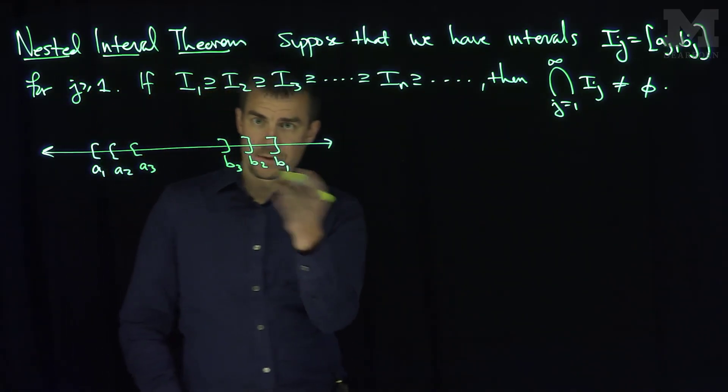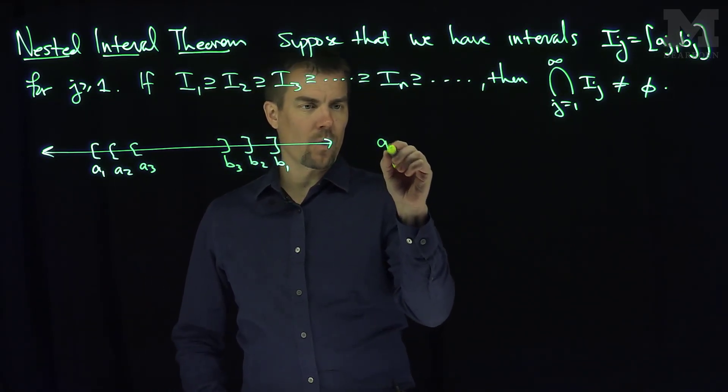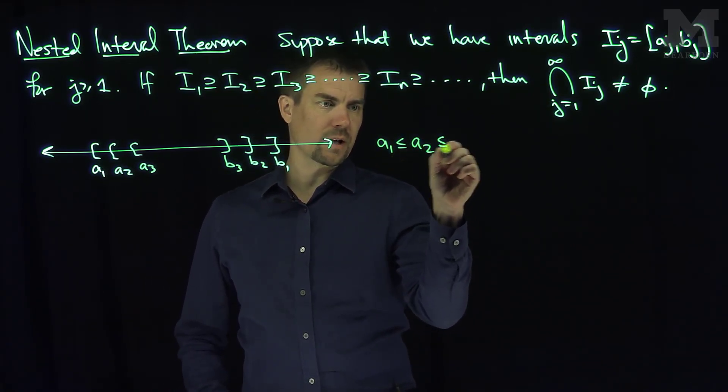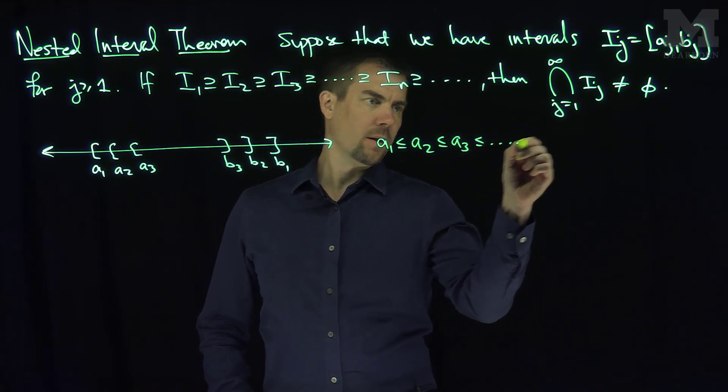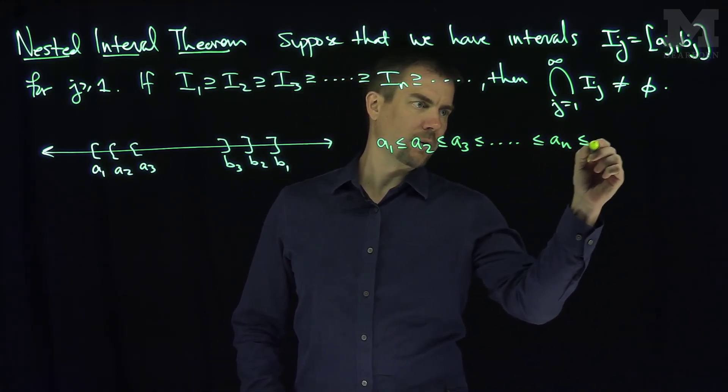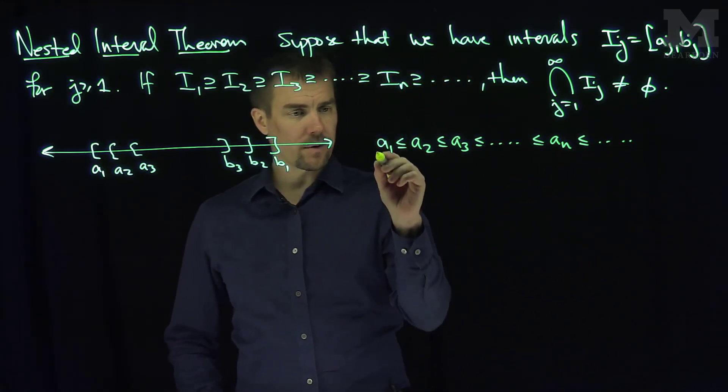And so note, from this diagram, we can see the following. We can see that a1 is less than or equal to a2 is less than or equal to a3, etc., less than or equal to an. So it's an increasing sequence,